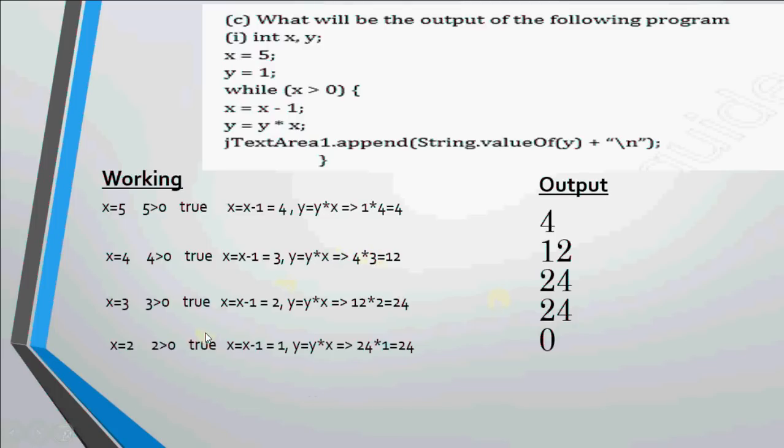Then we check if x is greater than 0. That is 2 is greater than 0. Yeah, it is true. Then we get 1. And 24 into 1 is 24 only. We show it in the text area. And then x is checked again with 0. Yes, 1 is greater than 0. Condition is true. But 24 multiplied by 0 gives me 0. So we show 0 in the text area. And this time when we check x greater than 0. 0 greater than 0 gives me false. So the loop stops here. And whatever has been added in the text area till now is the output of the question. So we get all this as the output each number on a separate line because we had backslash n over here. Hope this is clear.